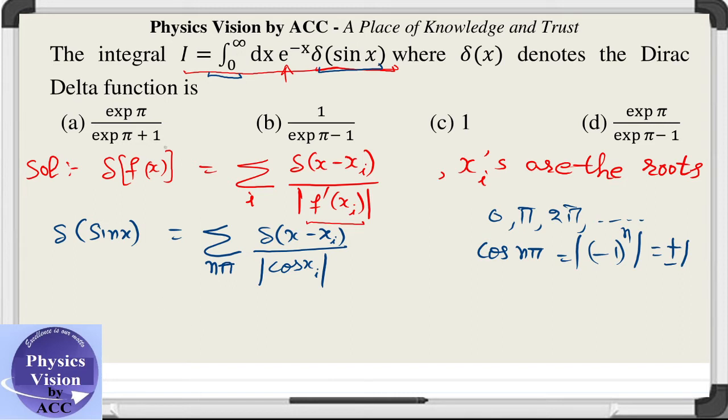Now we will make use of another property: the function with delta function at x minus a gives you the value of the function at x is equal to a only. So we need not integrate it. We can just substitute the value of a. Here this a is equal to n pi as xi.